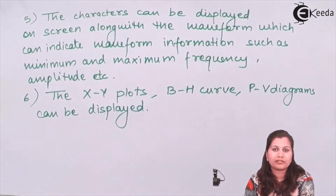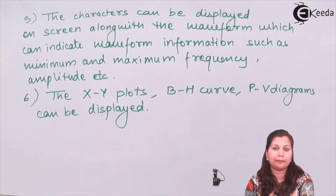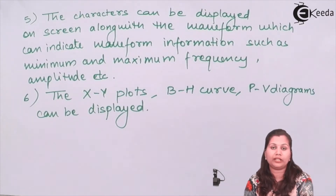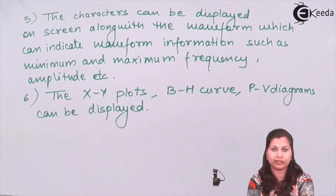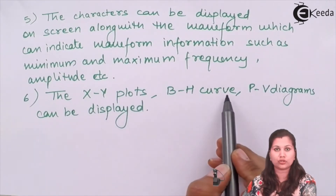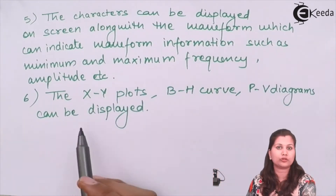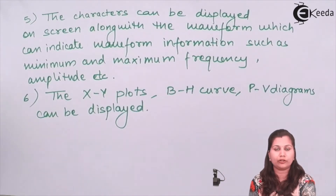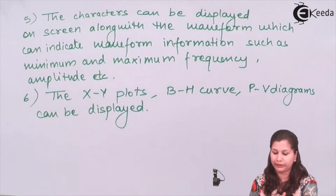In conventional CROs, only the XY plot — a two-dimensional graph of electronic signals — can be obtained. But in the DSO we can also obtain a three-dimensional graph. Not only XY plots, but also BH curves and PV diagrams can be displayed on the screen of the DSO, so both 2D and 3D figures of the waveform can be obtained.